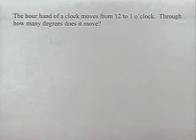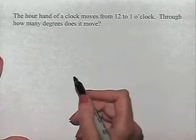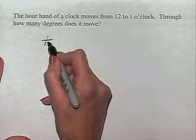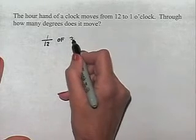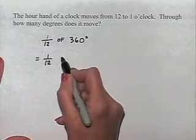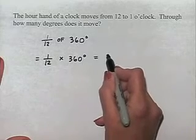Now let's look at a problem dealing with degree measure. The hour hand of a clock moves from 12 to 1 o'clock. Through how many degrees does it move? Well, recall that a full revolution would be 360 degrees. So we're going 1/12th of 360 degrees, which means we're going to take 1/12th and multiply that times 360 degrees to come up with our result of 30 degrees.